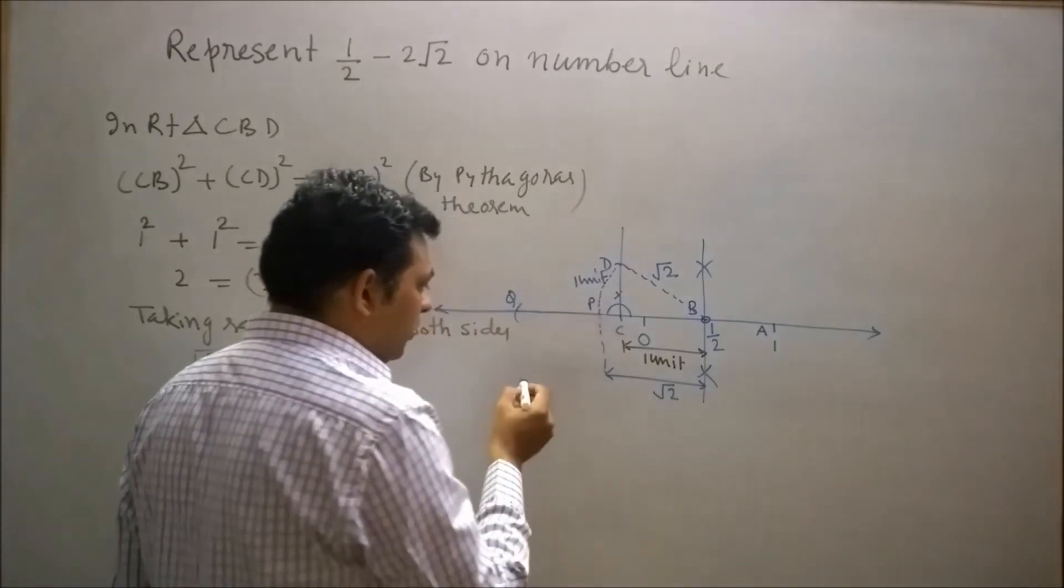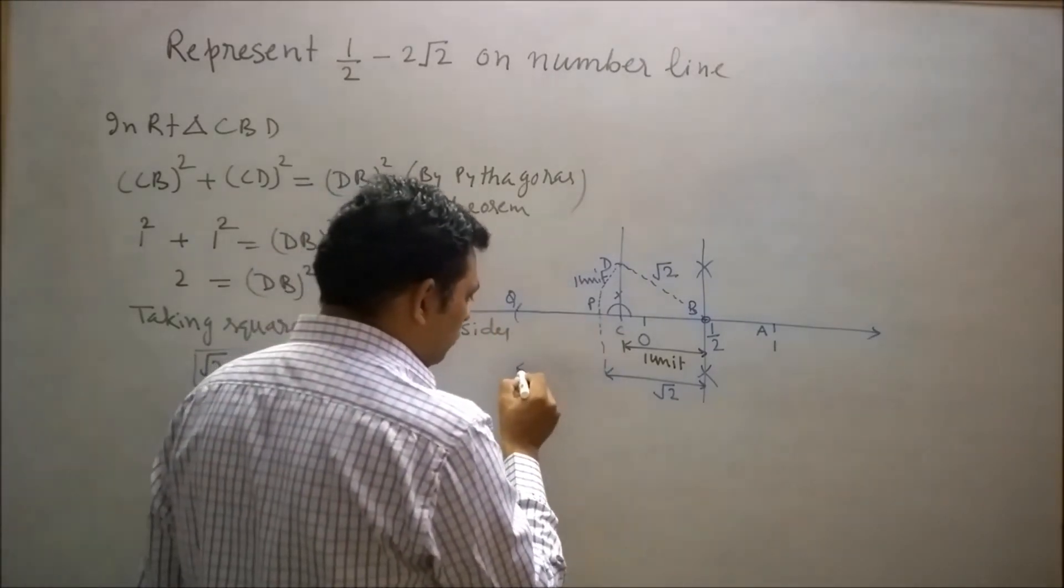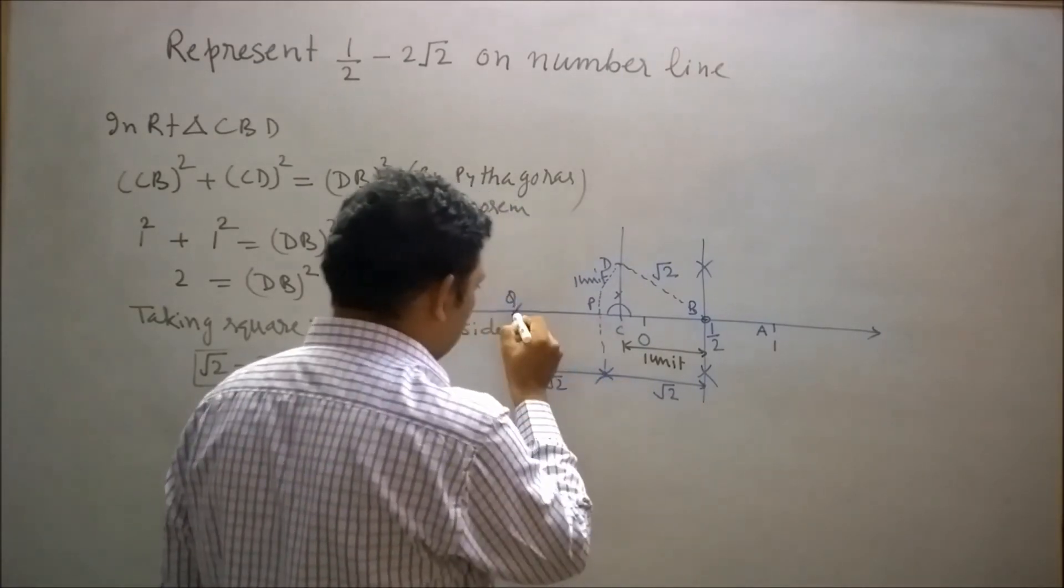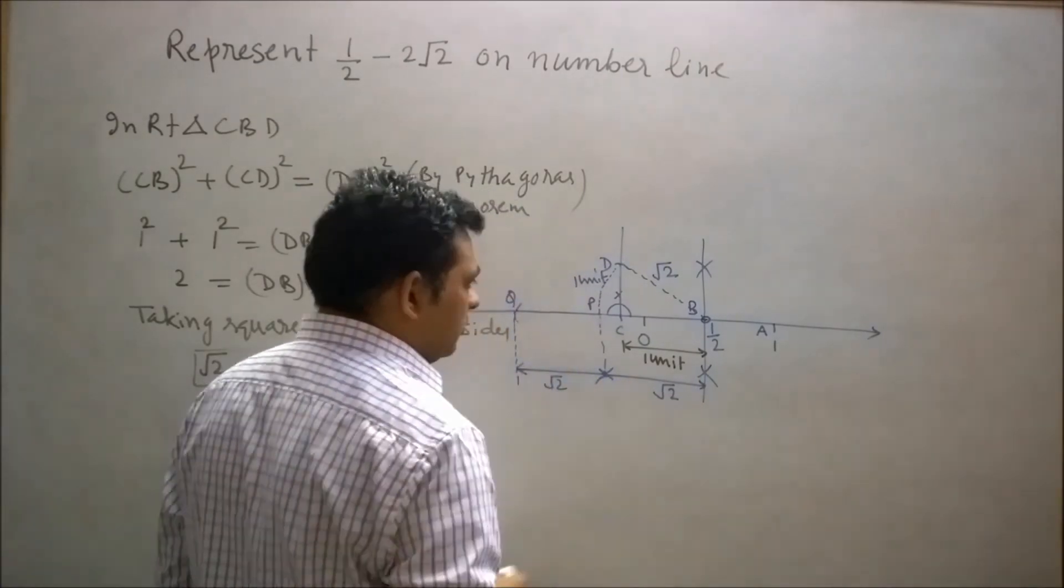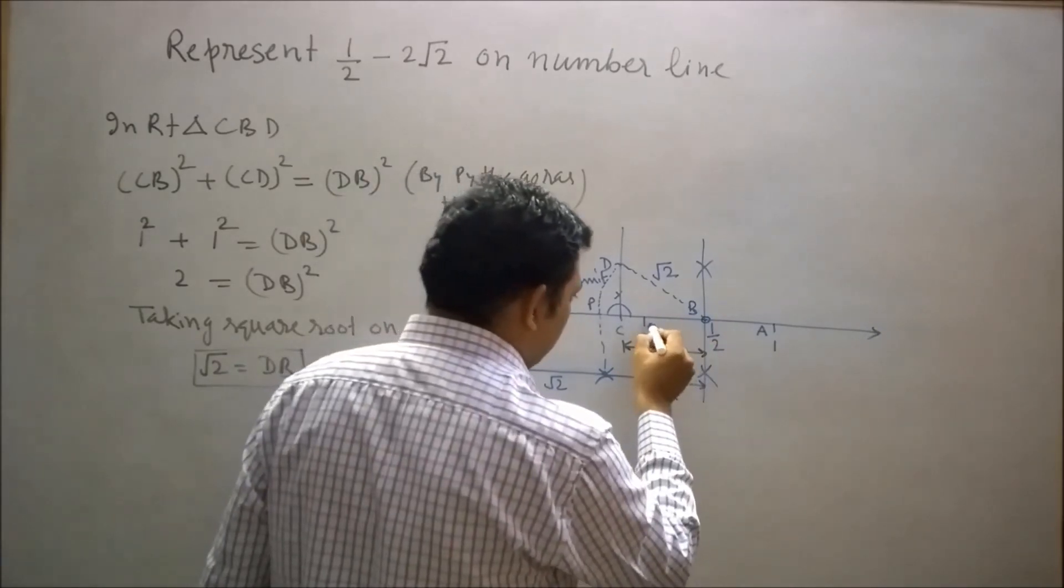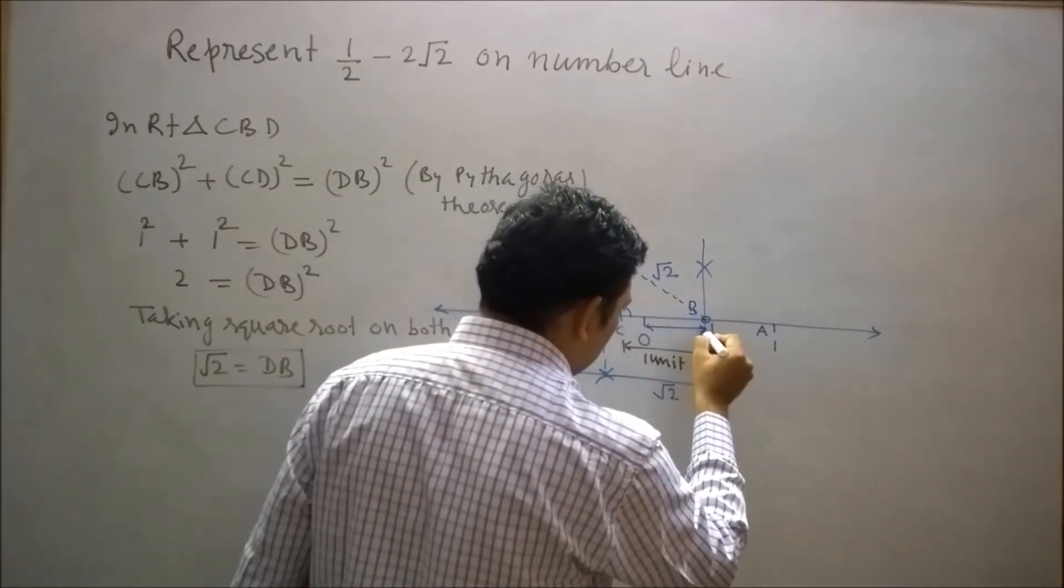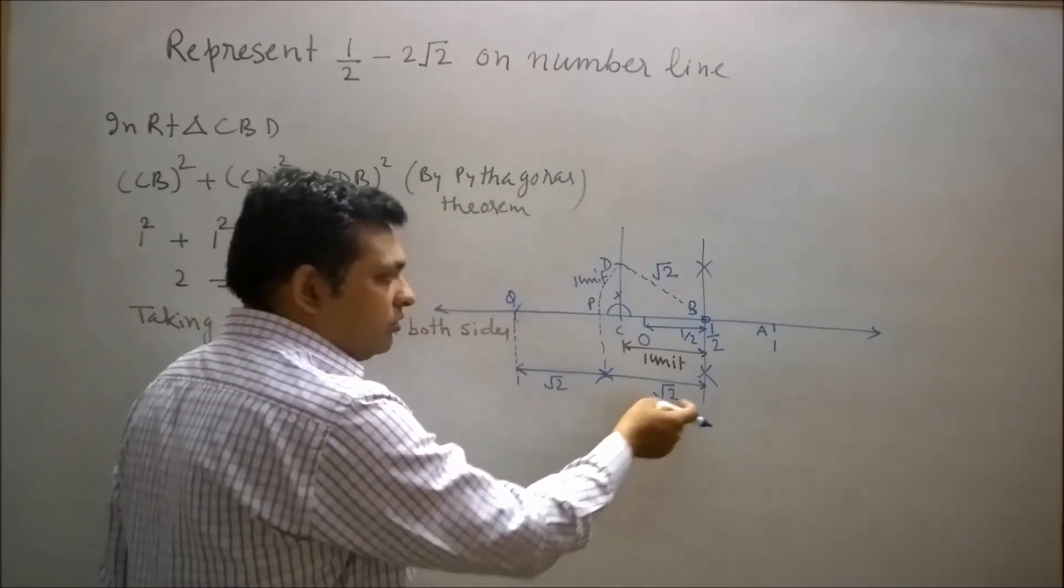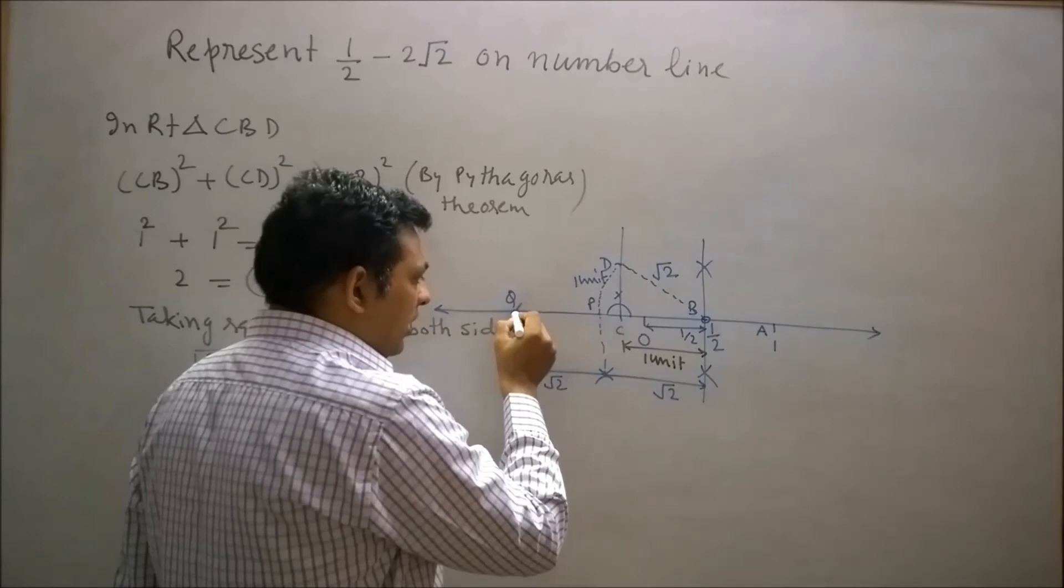Here BP is equal to root 2. Here BP also represents root 2. Here OP represents half. Now we have moved 2 root 2 distance from the left side of P at Q.